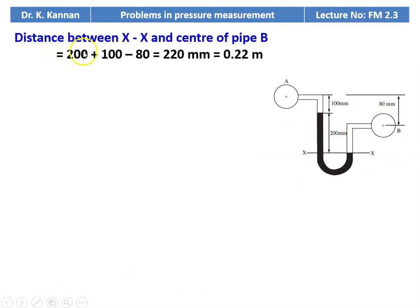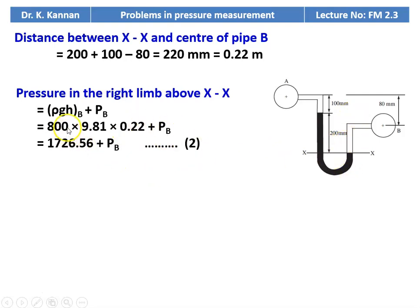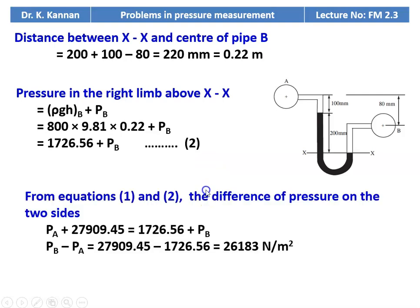The distance between XX and the center of pipe B equals 200 plus 100 minus 80 equals 220 mm, which is 0.22 meter. Pressure on the right limb for pipe B: ρgH_B plus P_B equals 800 × 9.81 × 0.22 plus P_B. Simplifying: 1726.56 plus P_B — equation 2. Equating equations 1 and 2: Pₐ plus 27,909.45 equals 1726.56 plus P_B. Therefore P_B minus Pₐ equals 27,909.45 minus 1726.56 equals 26,183 newtons per meter square.